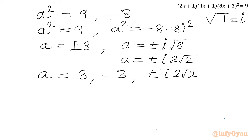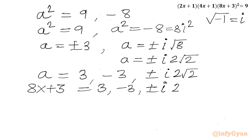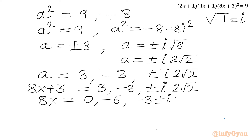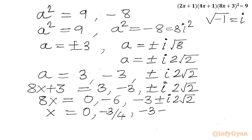Since a was our substitution for 8x+3, we write 8x+3 = 3, −3, and ±2i√2. Subtracting 3 from both sides: 8x = 0, −6, and −3 ± 2i√2. Dividing by 8: x = 0, −3/4, and (−3 ± 2i√2)/8.